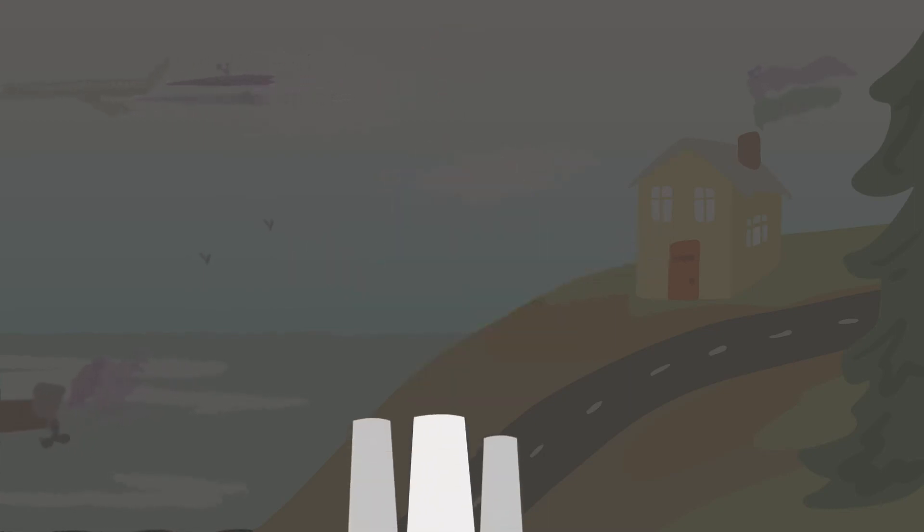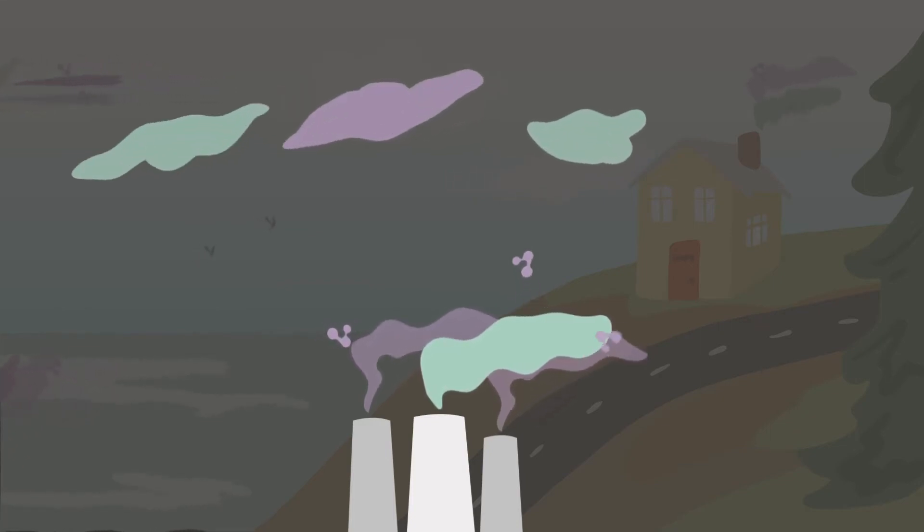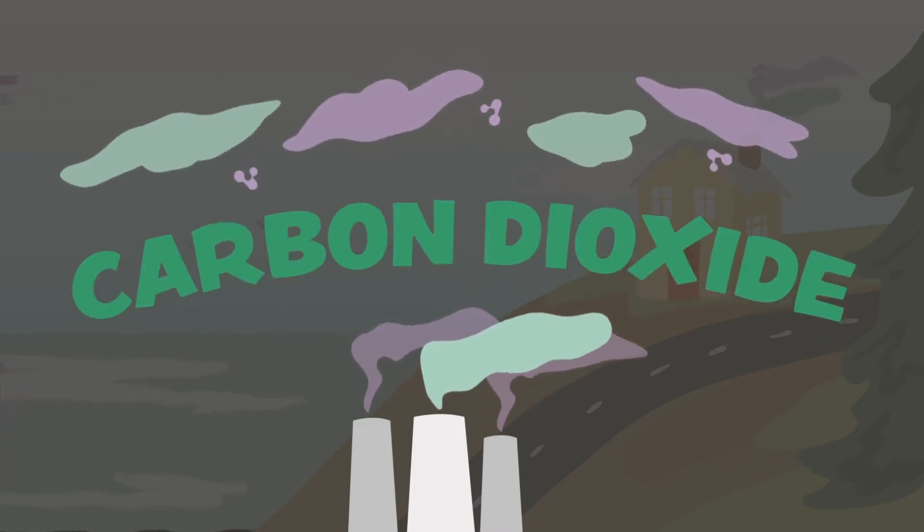When we burn the fossil fuels, this carbon that was stored in the fossil fuels gets released back into the sky. It forms with oxygen and becomes carbon dioxide.